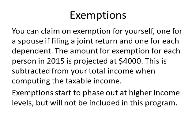What are exemptions? You can claim an exemption for yourself, one for a spouse filing a joint return, and one for each dependent. The amount for exemptions in 2015 is projected at $4,000 for each person. This is subtracted from your total income when computing the taxable income. Exemptions start to phase out at higher income levels, but that's not included as part of this program.